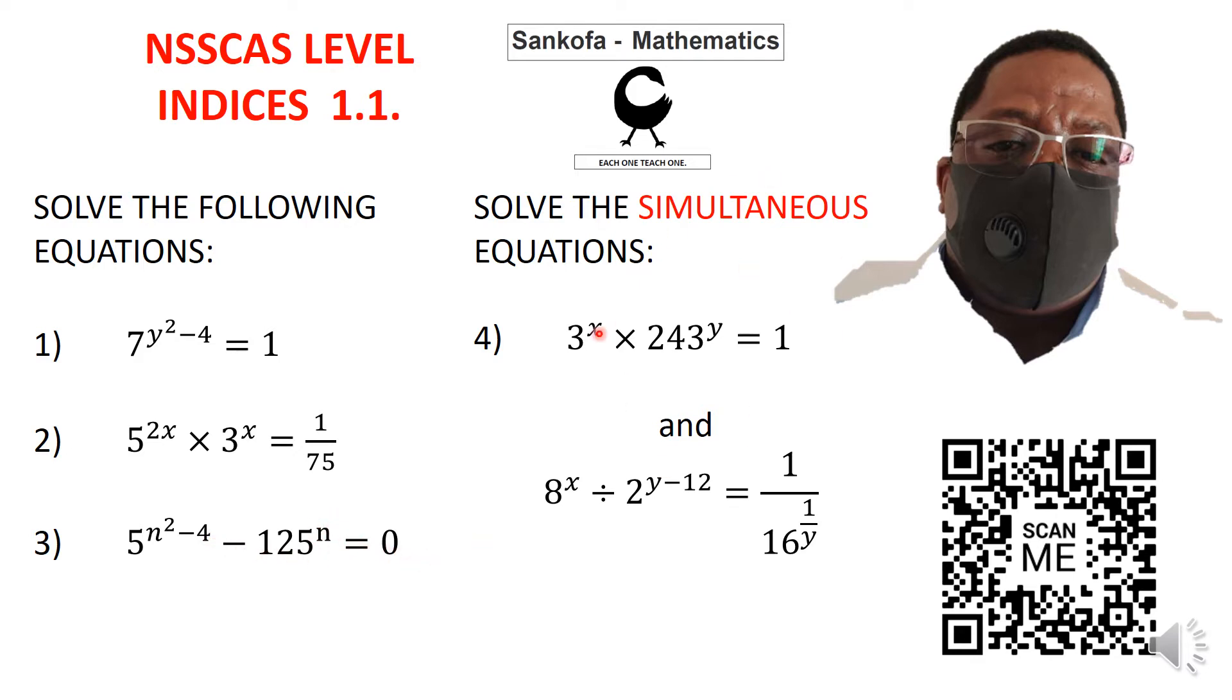And these two are simultaneous equations that you're supposed to solve at the same time. So this one is 3^x × 243^y = 1. And the other one is 8^x ÷ 2^(y-12) = 1/(16^(1/y)).